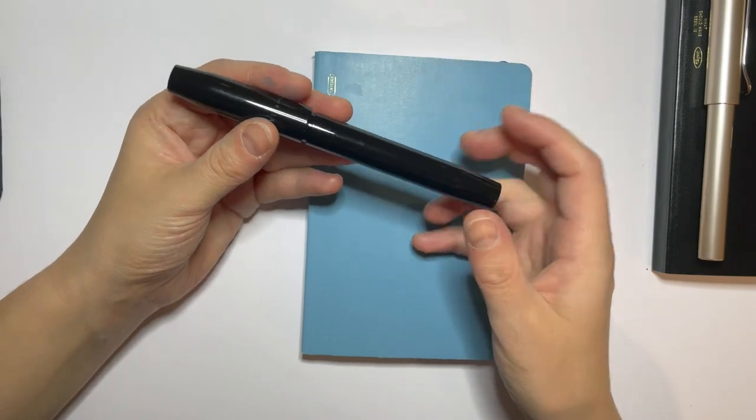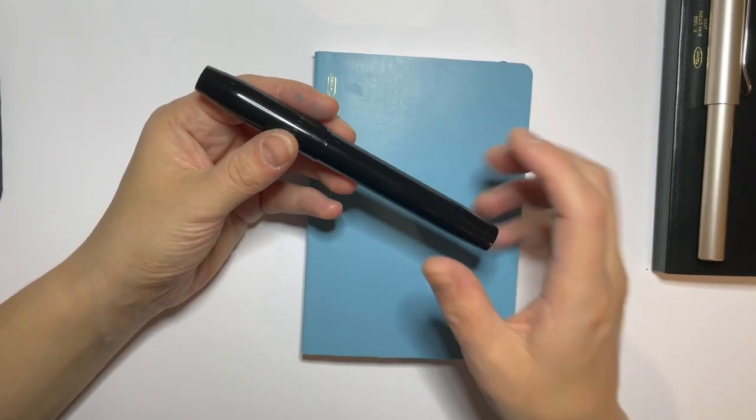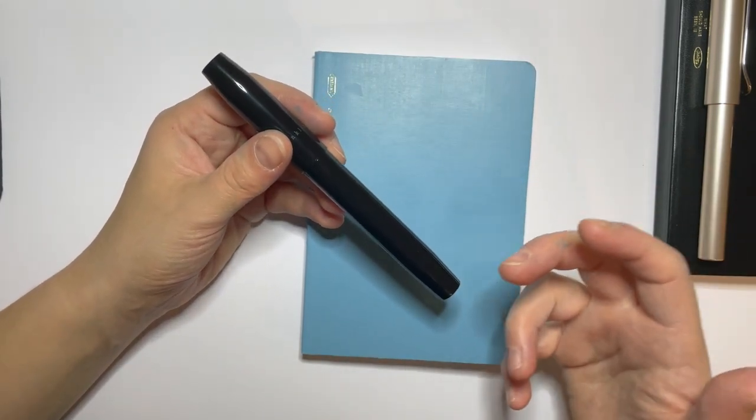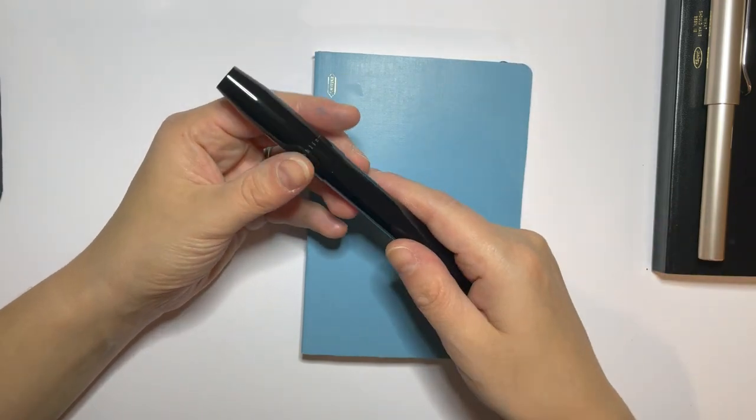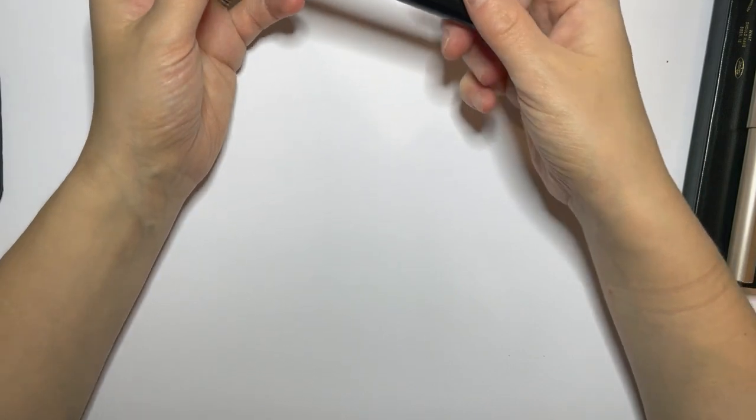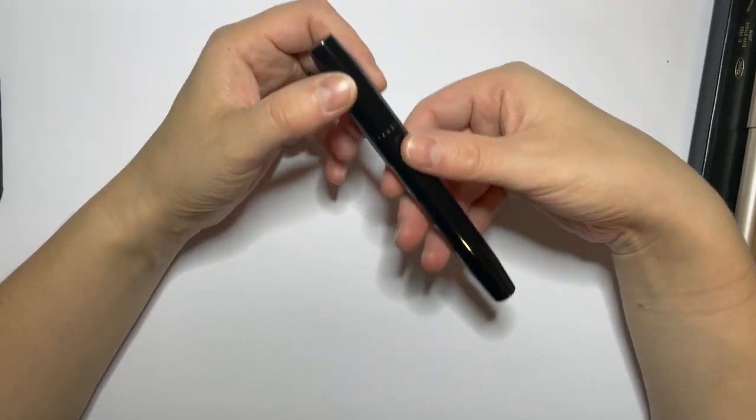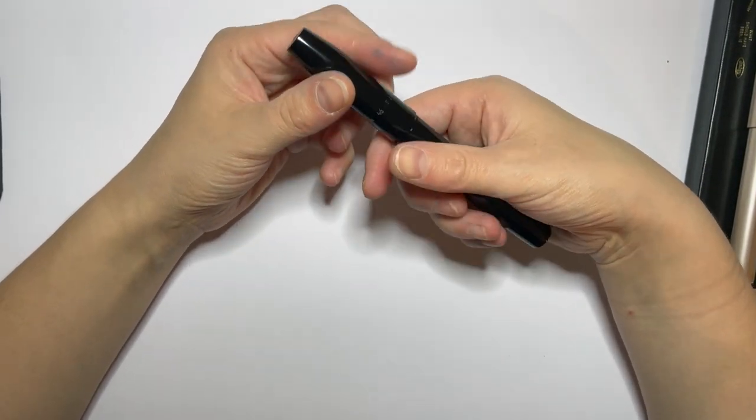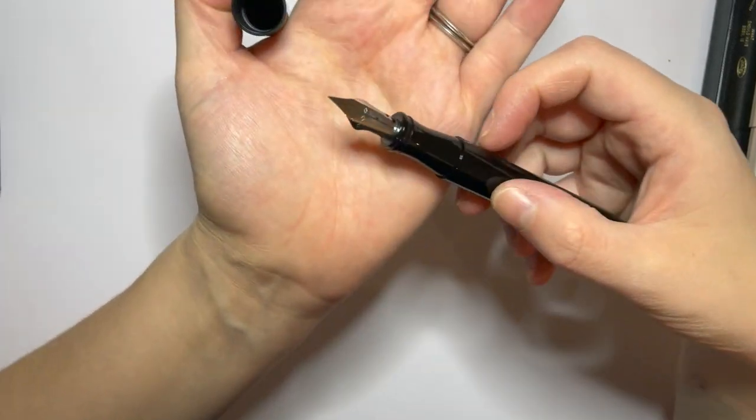Usually when I do a new pen day video, I really haven't tried out the pen at all. This one I have been writing with, so I can give you some more thoughts on it. I'll just move this stuff to the side. Jumping straight in, this is a Franklin-Christoph Model 46 and it has an extra fine flex nib.